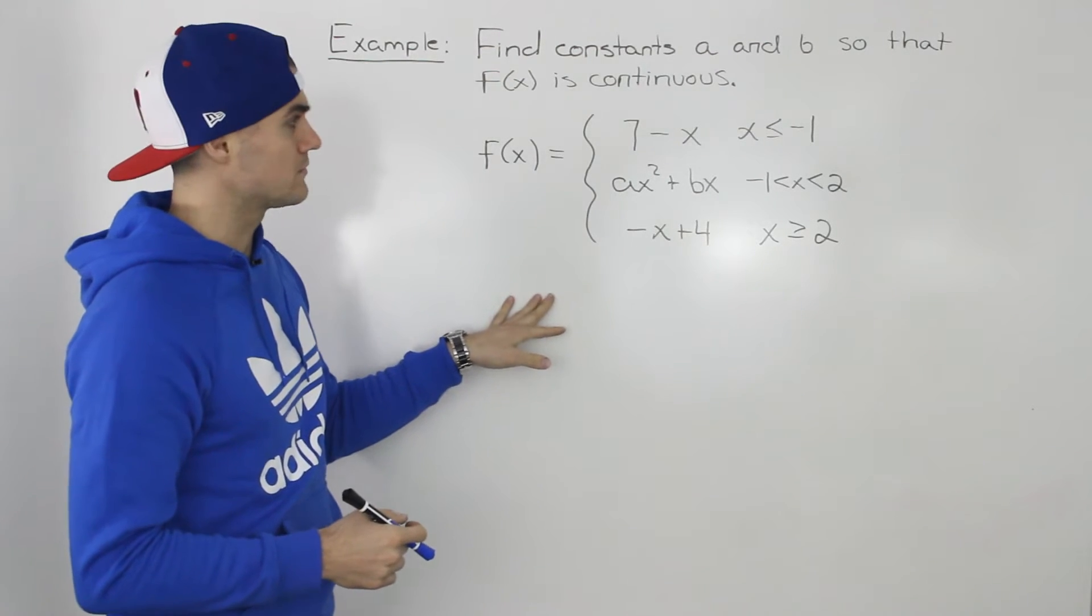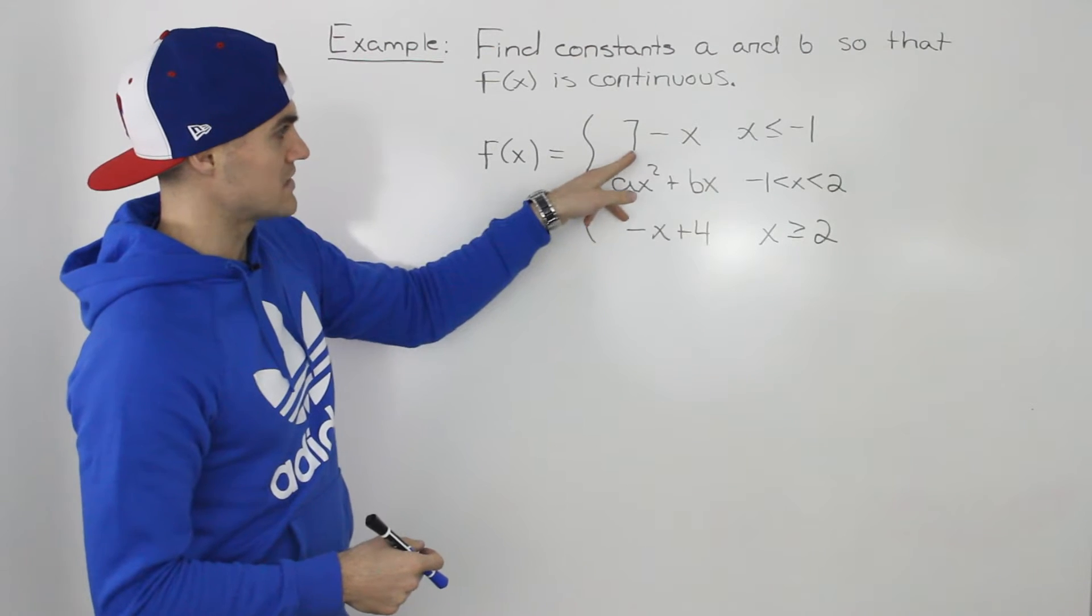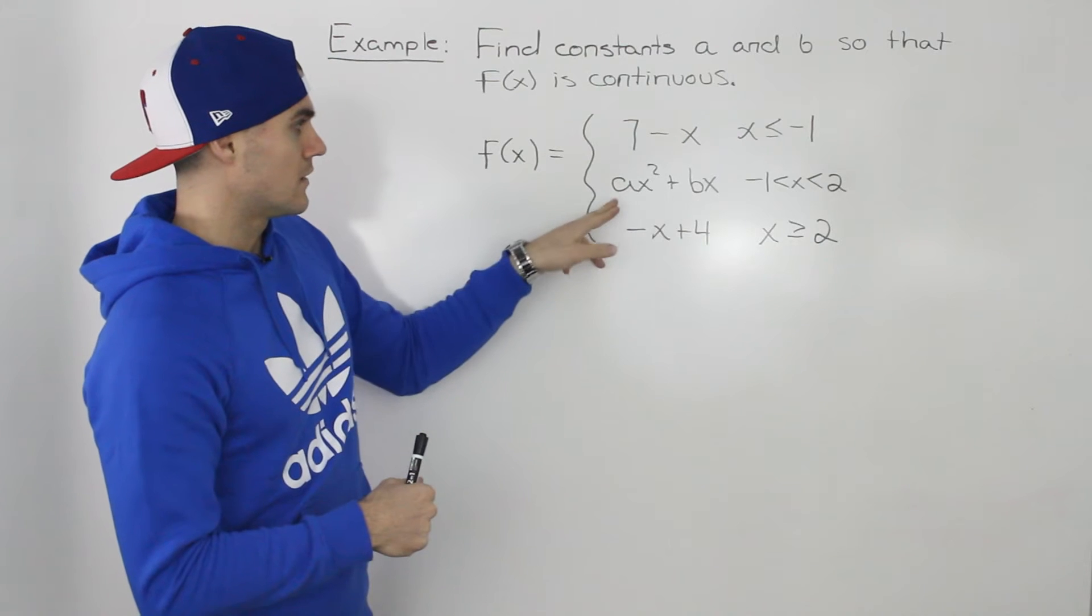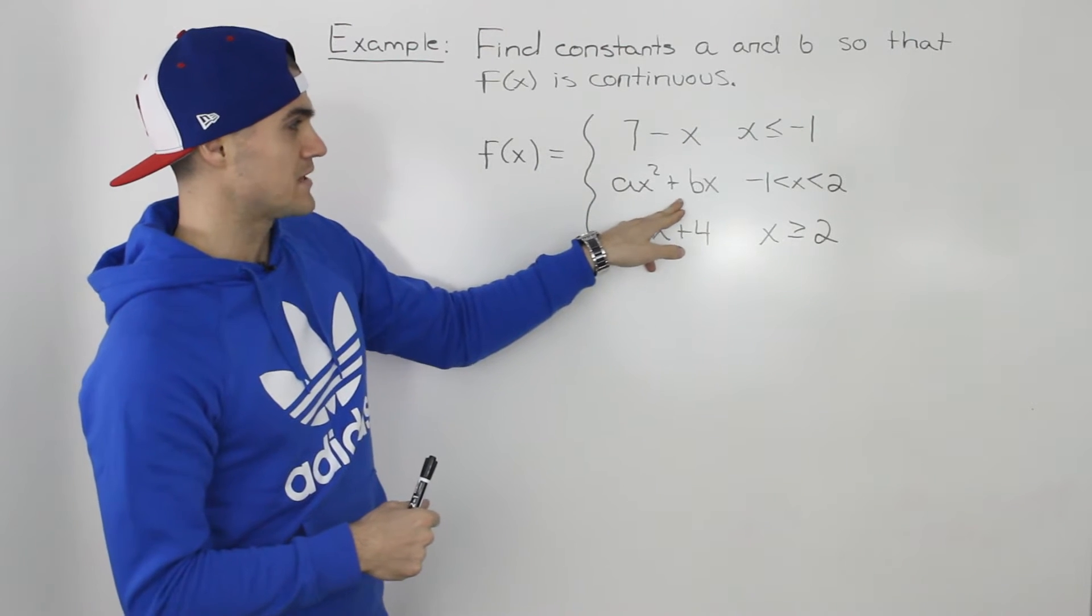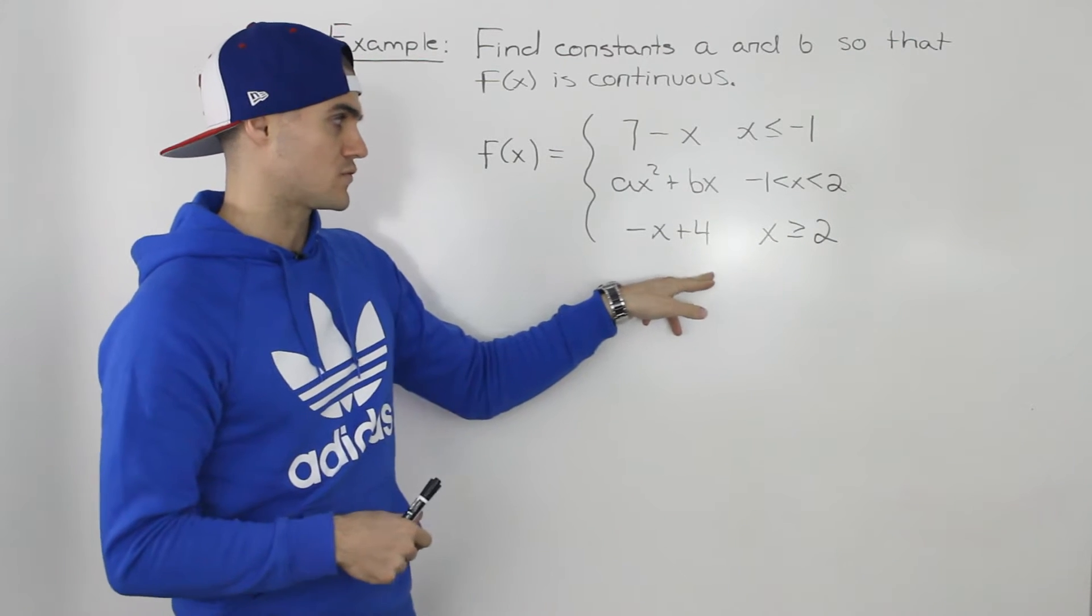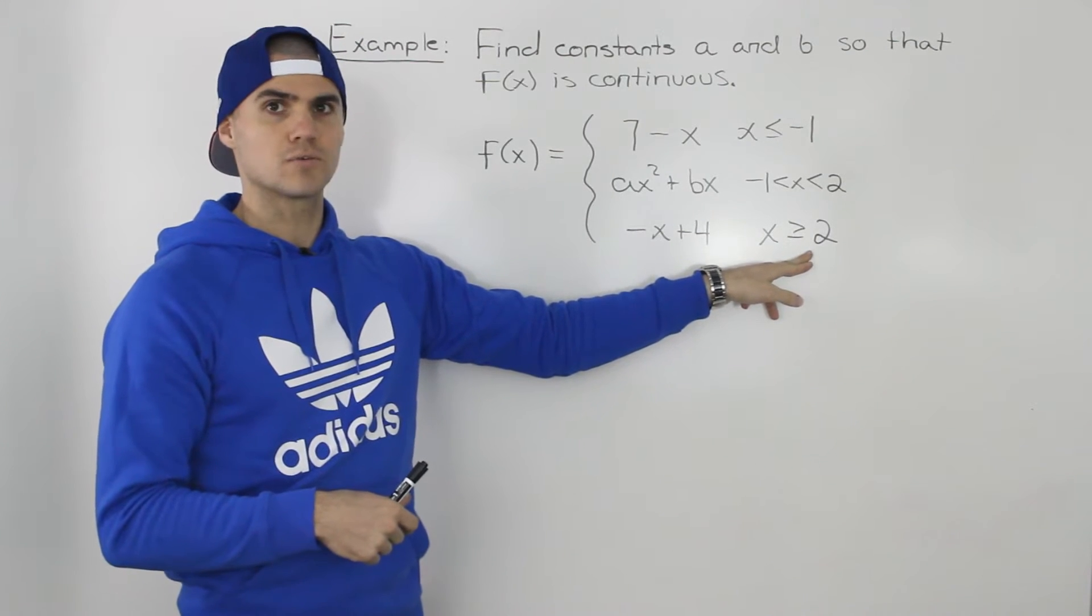Notice this is a piecewise function where the y values are defined by 7 minus x when x is less than or equal to negative 1, by ax squared plus bx when x is between negative 1 and 2, and by negative x plus 4 when x is greater than or equal to 2.